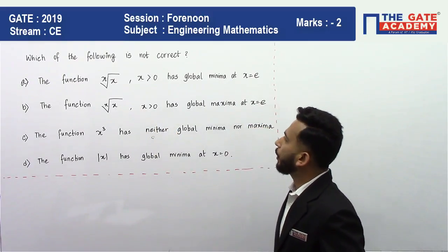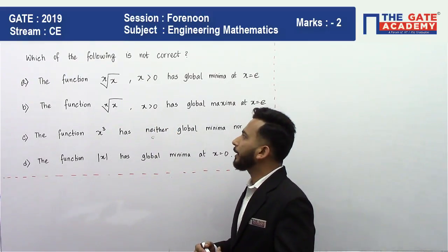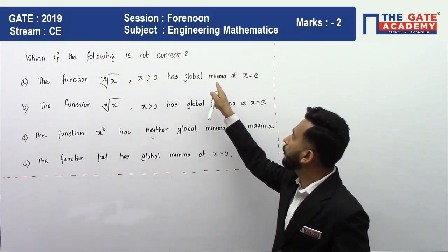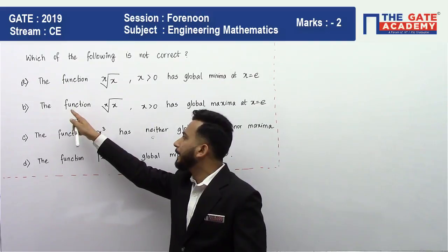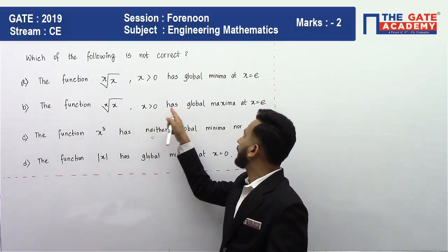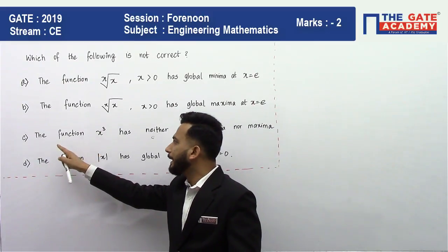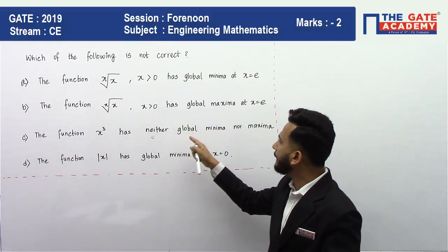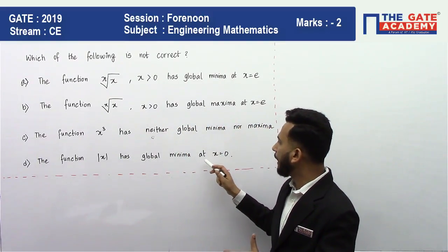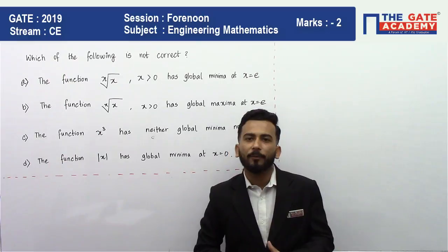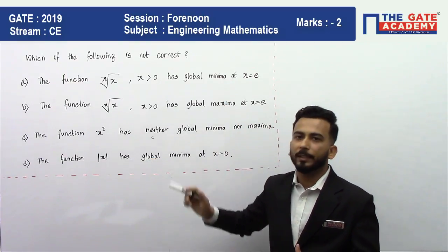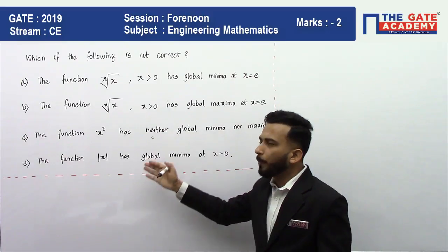The question is: which of the following is NOT correct? Option A: the function x^(1/x) for x > 0 has global minima at x = e. Option B: the function x^(1/x) for x > 0 has global maxima at x = e. Option C: the function x³ has neither global minima nor maxima. Option D: the function |x| has global minima at x = 0. You have to find which option is not correct.